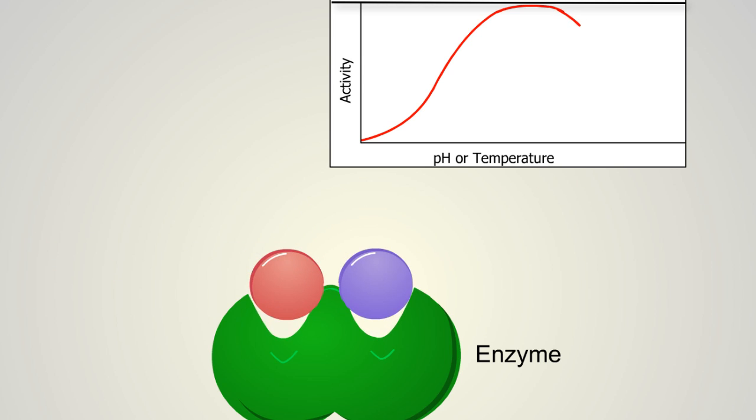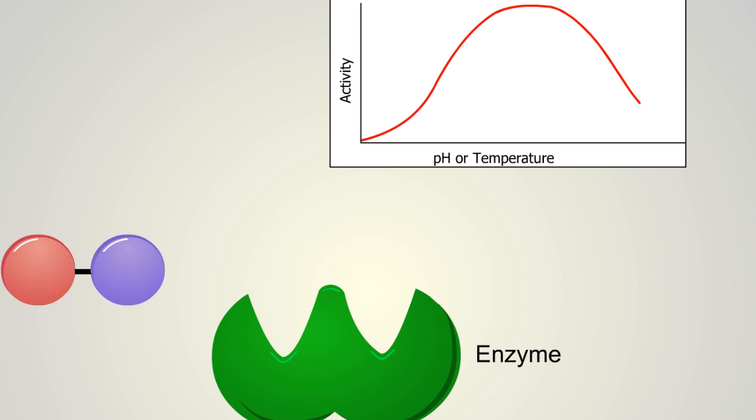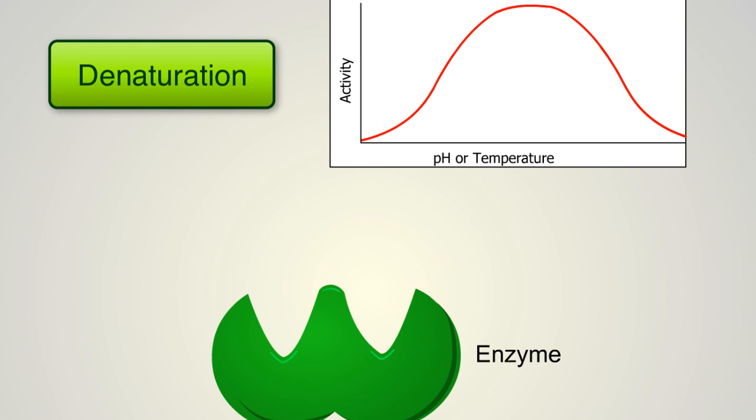When conditions are less than optimal, an enzyme will lose its configuration and slow its activity. This is due to a change in the three-dimensional shape of the enzyme and is called denaturation.